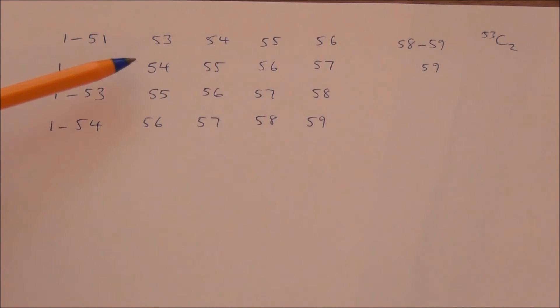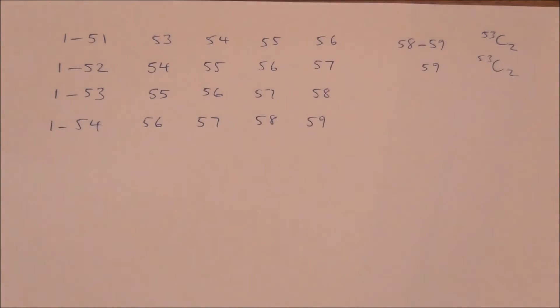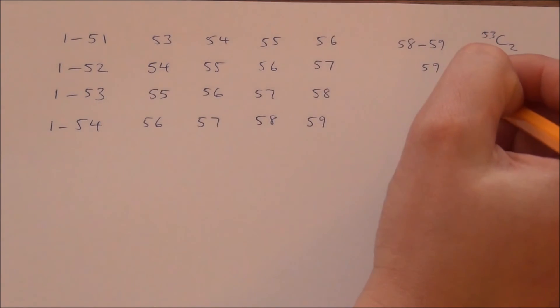For 54, 55, 56, 57, we've now got 1 to 52 we can choose from beforehand, or 59. So, again, 53 choose 2. For 55, 56, 57, 58, well, we can now have anything from 1 to 53 beforehand. There's no available numbers afterwards. So, again, that's 53 numbers choose 2.